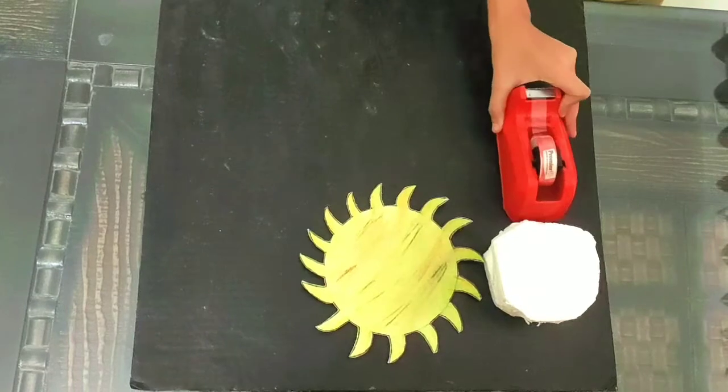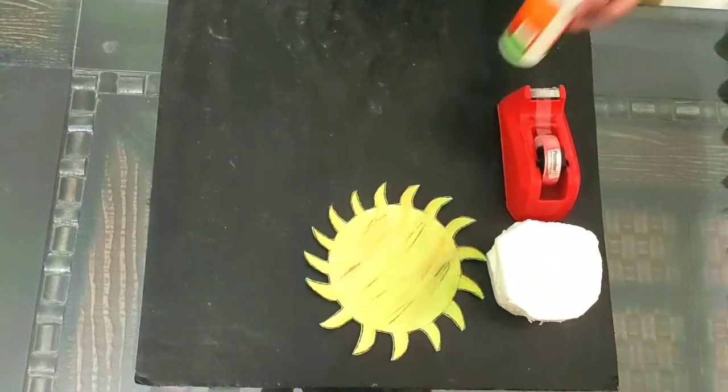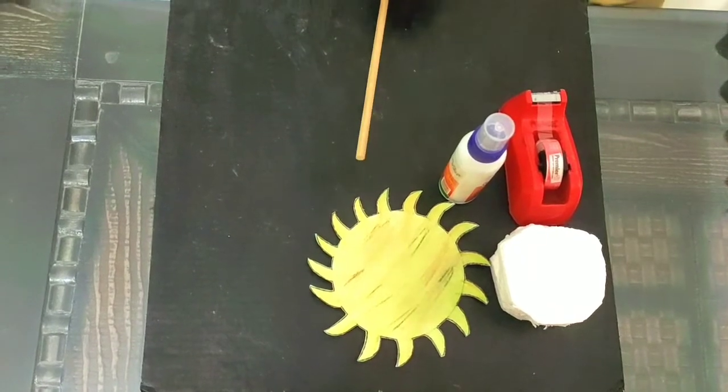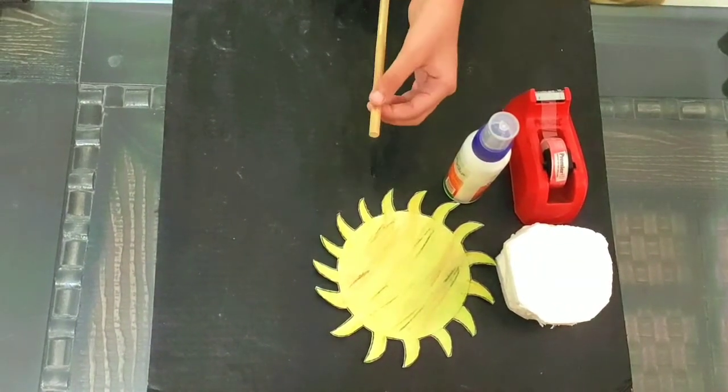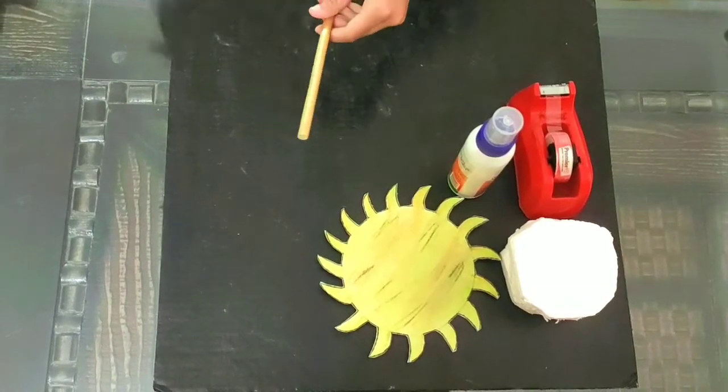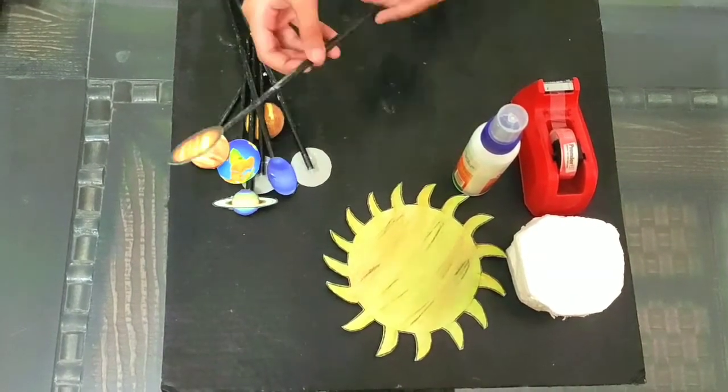We need cello tape, glue. We need some sticks. We need to paint these sticks and sharpen the point, so if we sharpen the point, it looks like this.